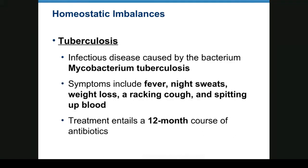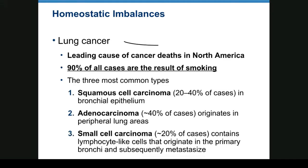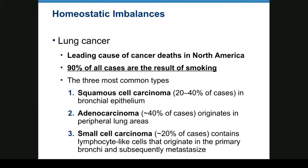Tuberculosis is an infectious disease caused by Mycobacterium tuberculosis. Symptoms include fever, night sweats, weight loss, racking cough, and coughing up blood. There are antibiotics to treat it, but a 12-month course of treatment is required, and if you get tuberculosis you'll be in mandatory home quarantine. Lung cancer is a leading cause of cancer death in North America; 90% are related to smoking. The three most common types are squamous cell carcinoma from bronchial epithelium, adenocarcinoma from peripheral lung areas, and small cell carcinoma from lymphocyte-like cells. All can metastasize to liver, brain, and beyond — so don't smoke.